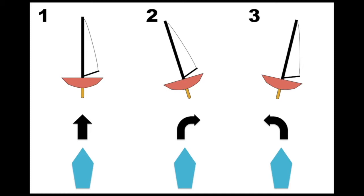This is why it's important to hike in strong winds. If you don't keep the boat flat it will heel to leeward and steer up into the no go zone. To counteract it you'll have to use a lot of rudder and this will create unnecessary drag.